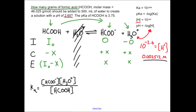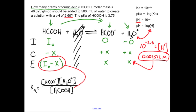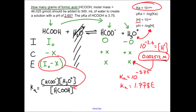At first it looks like we have too many variables, but remember — the equilibrium concentration of H₃O⁺ is exactly X, which we already calculated as 0.002512 M. That fills in all the unknowns. We also need the Ka value: Ka = 10^(−3.75) = 1.778 × 10⁻⁴.